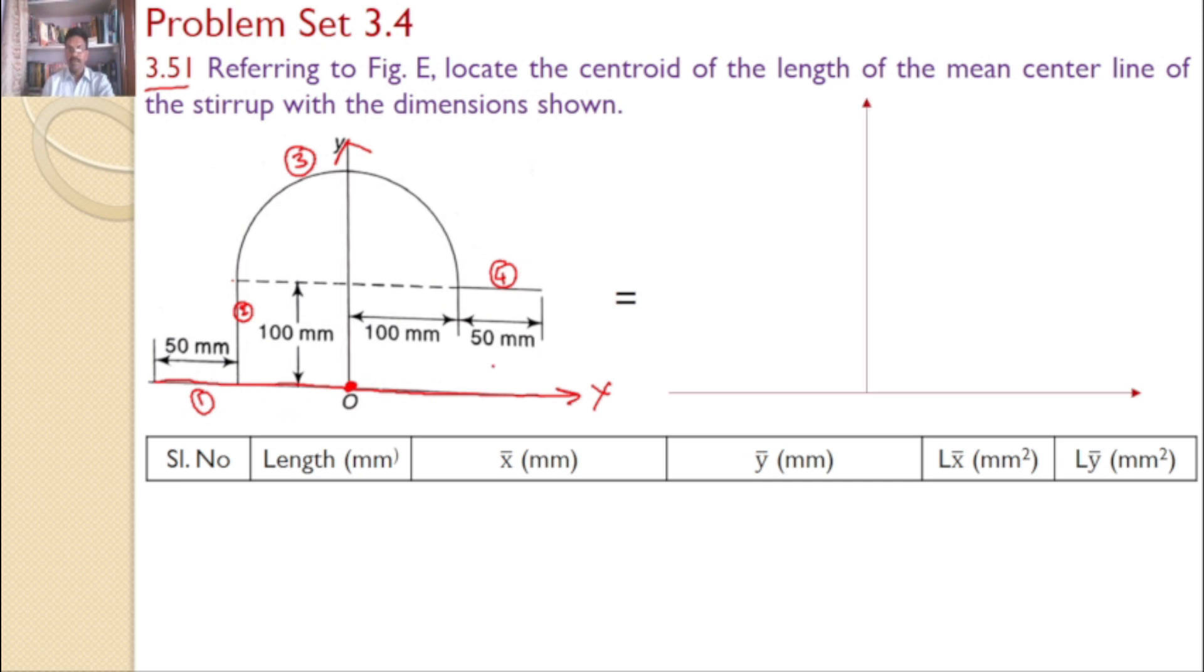First, line 1. This is the reference x-axis and y-axis, and this is the origin. Let us consider line 1 of length 50 mm. The length of line 1 is 50, which is at a distance of 100 mm from the y-axis along the x-axis. The centroid for line 1 is here. What are the coordinates of this centroid?